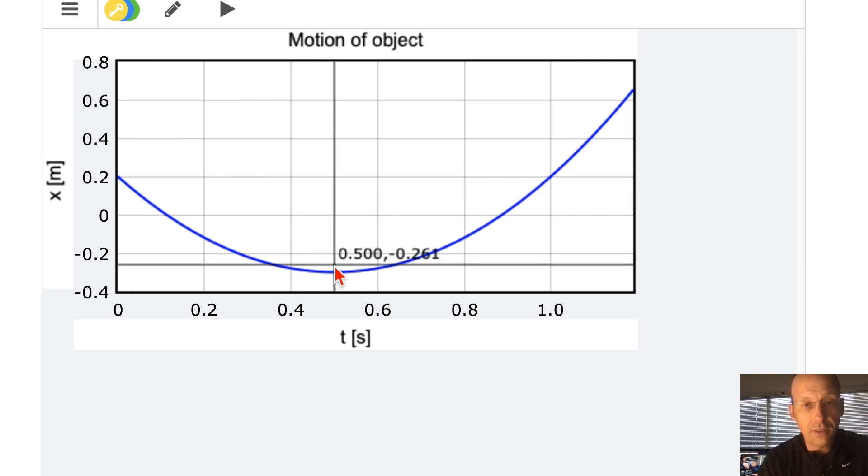It's negative 0.3. So it's going to be the final position of negative 0.3 minus the initial position of 0.2. So I get negative 0.5. I'm not sure about the rounding. We'll do it again.